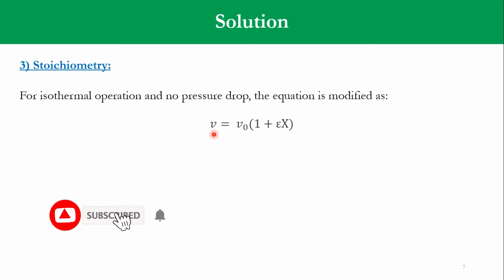Accordingly, V is equal to V naught 1 plus epsilon x because it is a gaseous system. If you see pressure term and temperature term here are cancelled out because of no pressure drop. So accordingly, C of A is equal to F of A over V, F is the molar flow rate, V is the volumetric flow rate, F of A is equal to F A naught into 1 minus x, V is equal to V naught 1 plus epsilon x.